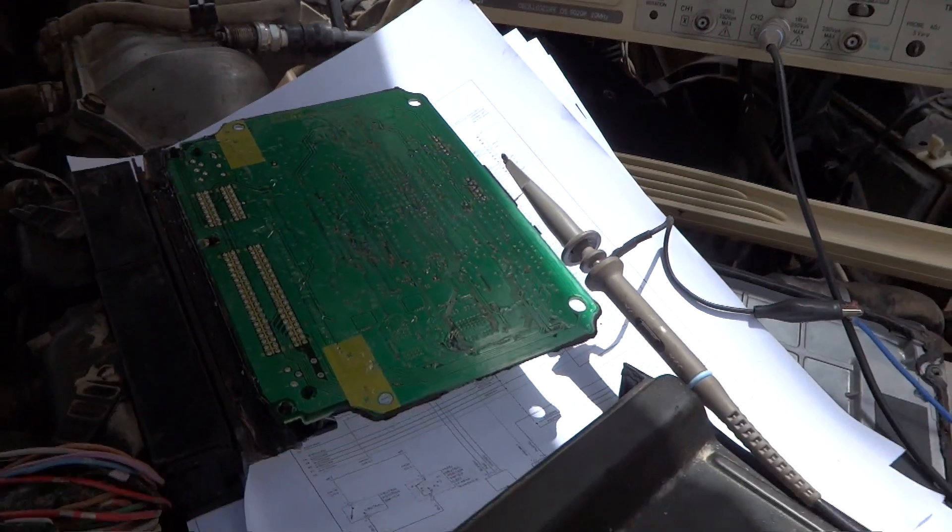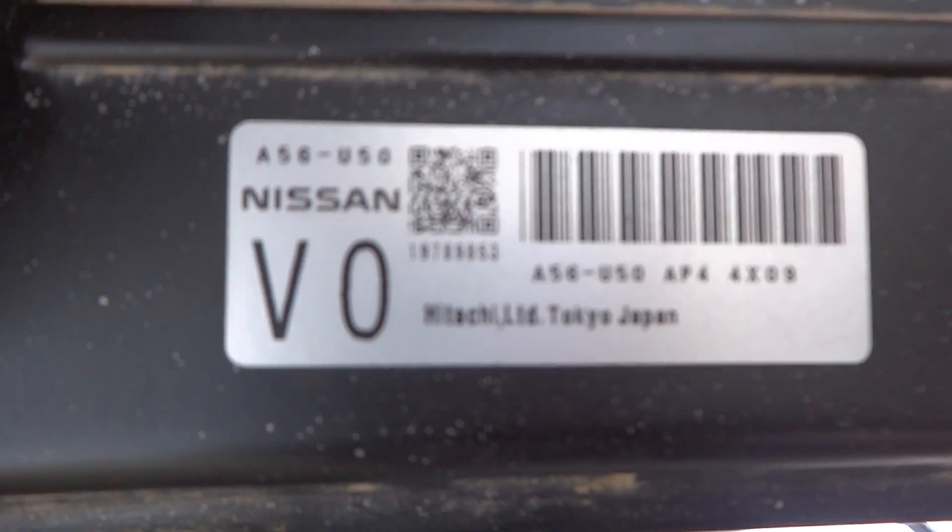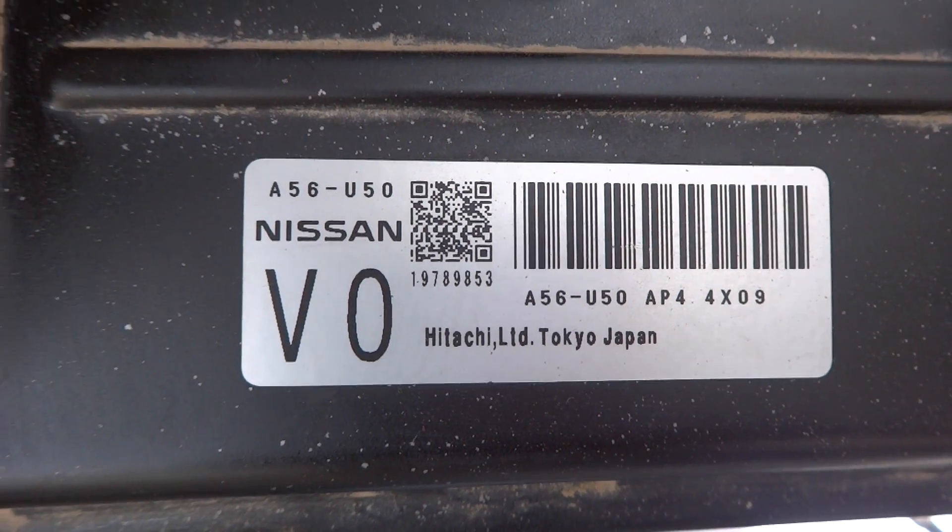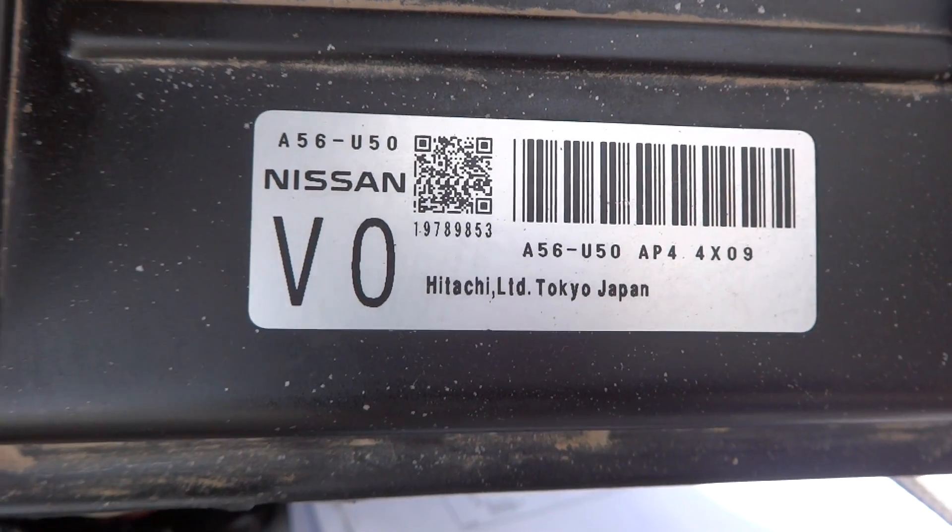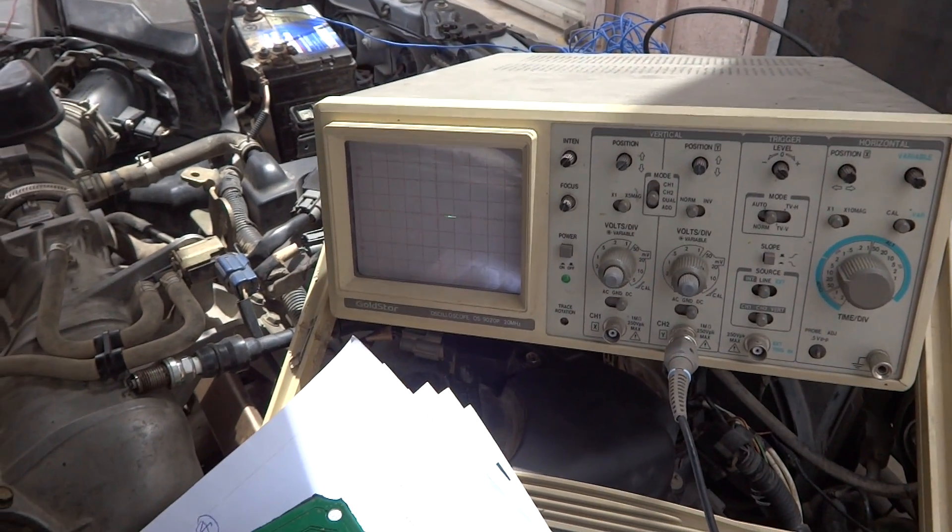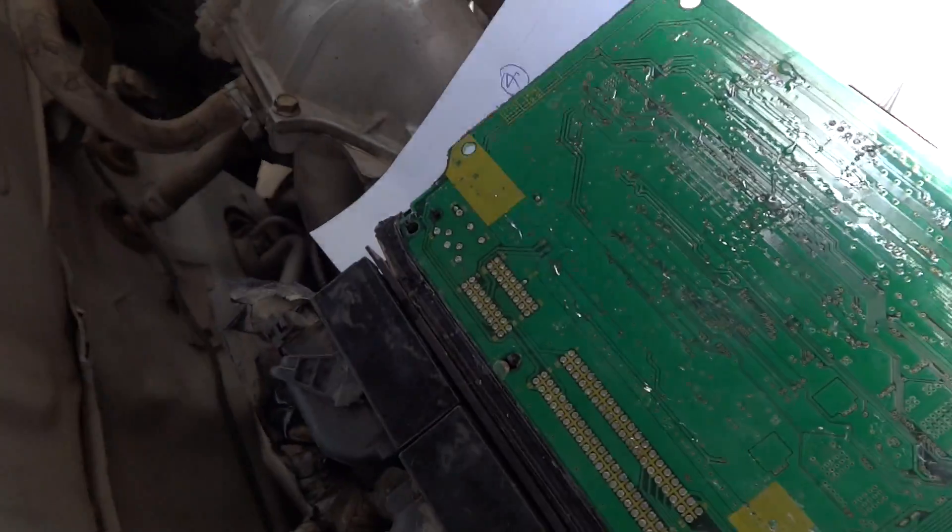Here I am going to check this Nissan ECU. This is the number A56 U50 Nissan V0, for a 2004 Nissan Sunny or Sentra. I'm going to check it with an oscilloscope to verify the health of the ECU.